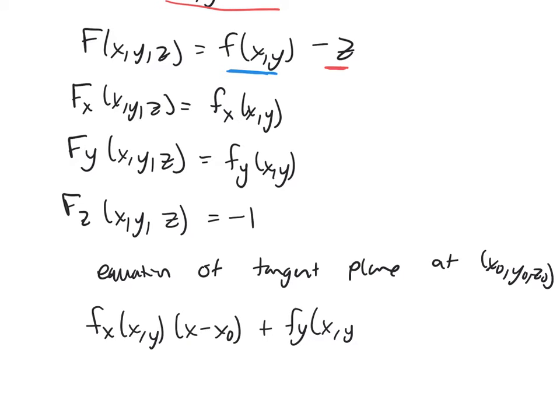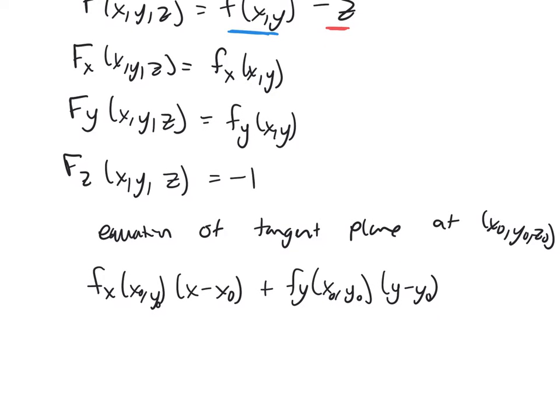...times (x minus x_0) plus f_y times (y minus y_0), and then the derivative with respect to z is negative one, so it would be minus (z minus z_0) equals zero.